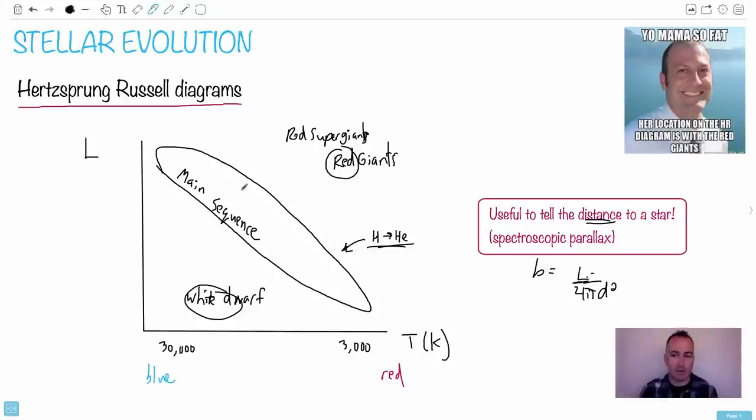You can also tell the distance to a star. That's what's kind of cool about it. Remember, to get the distance of a star, we have this equation: B equals L over 4πD². If we can know the luminosity, we can know the distance, because B is easy to measure on Earth. If you see a star, it's called spectroscopic parallax, even though it has nothing to do with the parallax method. You would spot maybe a main sequence star. From its spectrum, we can tell it's a main sequence.